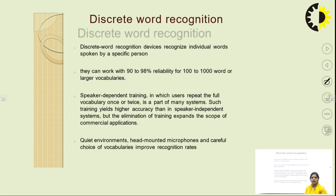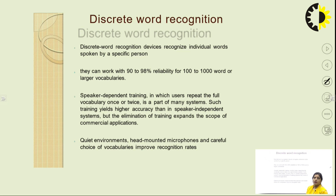Discrete word recognition recognizes individual words spoken by a specific person. These systems can work with 90 to 98 percent reliability for vocabularies of 100 to over 1000 words. It also includes speaker-dependent training, where the user repeats the full vocabulary once or twice. This is part of many systems and is a combination of multiple system approaches.